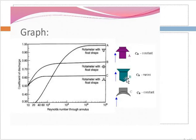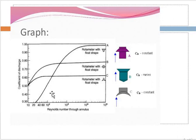We can also see graphs. From this graph, the coefficient of discharge versus Reynolds number is shown. The rotameter can be used up to Reynolds number 50,000. Different float shapes are shown — when the flow is high, a particular float shape is selected. The coefficient of discharge can reach a maximum of 1, or we can take 0.5 for a half-shape float. Different shapes A, B, C are given, and we select the float shape accordingly.